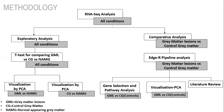Exploratory analysis was done between three groups of the dataset: gray matter lesions, control gray matter, and normal appearing gray matter. Normal appearing gray matter did not have lesions but was still multiple sclerosis gray matter. After doing exploratory analysis by PCA and t-test, I downstream my analysis to the group in which variation was most found — that is, between gray matter lesions and healthy control samples. I then performed pathway analysis and visualization.